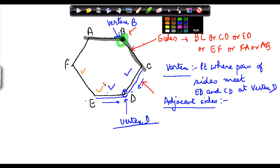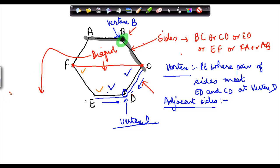And then the last thing which you need to know here is about the diagonals. Now we told that ED and CD are basically adjacent sides. Similarly, C and D are adjacent vertices also. But if you join any of the other vertices which are not adjacent to each other, let's say you have vertex F and you have vertex C, now if you join the two of them together, this line which joins them together is called the diagonal. So diagonal is a line which joins two vertices which are not adjacent.